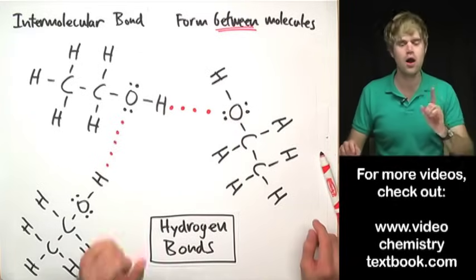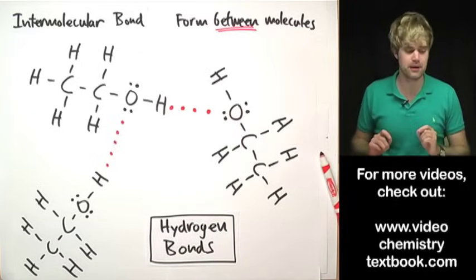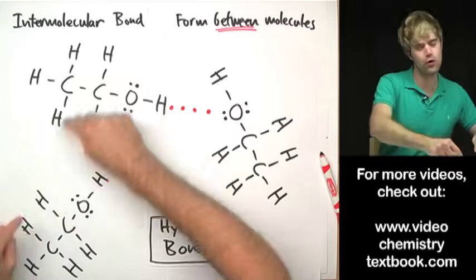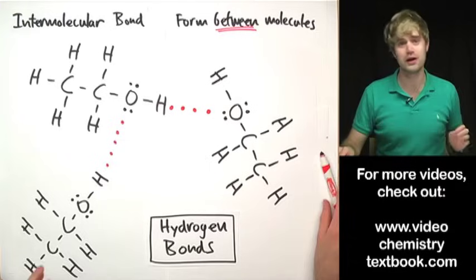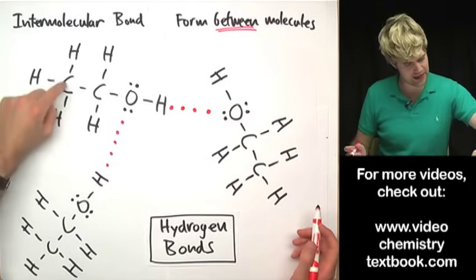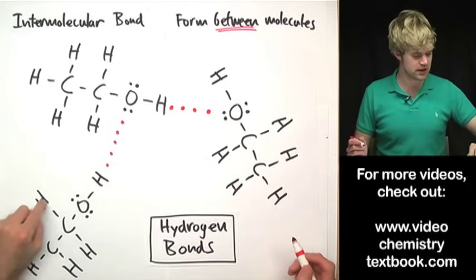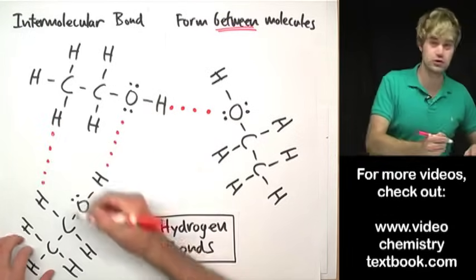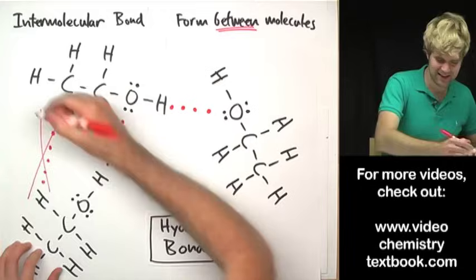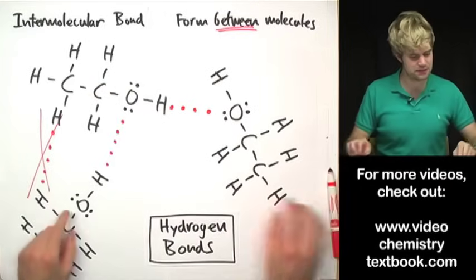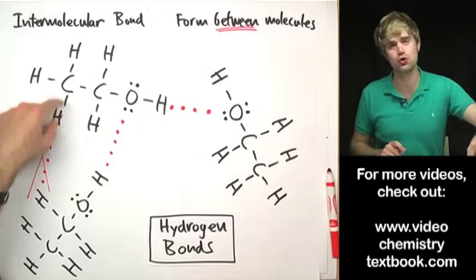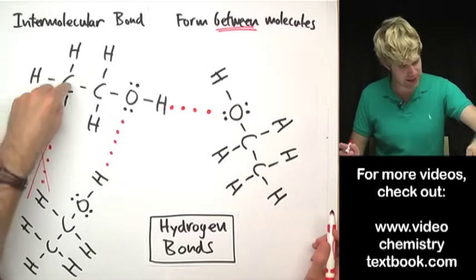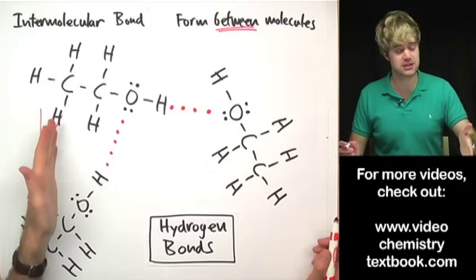A common mistake is thinking that any time there's an H it can form a hydrogen bond between molecules. People say, 'Oh, there's an H here connected to the C, and an H here connected to the C, so this can form a hydrogen bond.' No, it can't. It has to be an H connected to an O bonding with another O. An H with a C bonding with another H with a C — that's not a hydrogen bond.